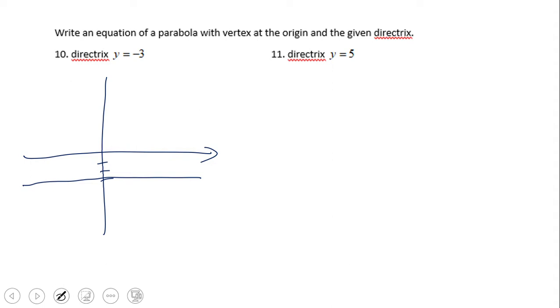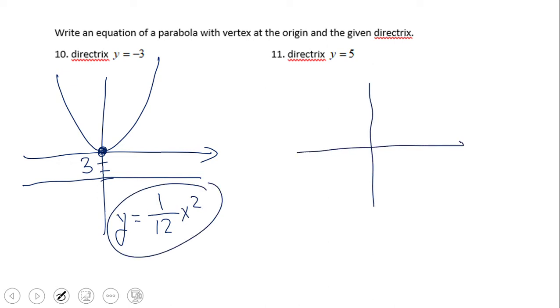y equals negative 3 is the equation of directrix. The vertex is 0 and 0. Again, the distance from the directrix to the vertex is 3 units, so the equation will be y equal 1 over 12 x squared. Go ahead and do number 11. Pause the video, please.